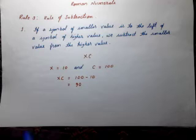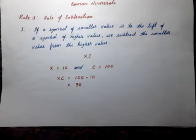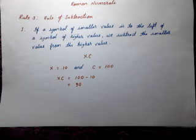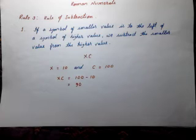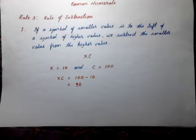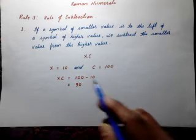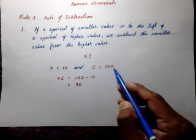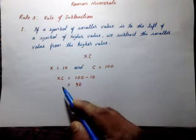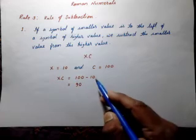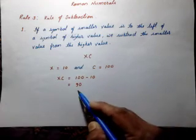Rule 3: the rule of subtraction. If a symbol of smaller value is to the left of a symbol of higher value, we subtract the smaller value from the higher value. For example, let us take the number XC. X has a value of 10 and C has a value of 100, so XC will be 100 minus 10, which equals 90.